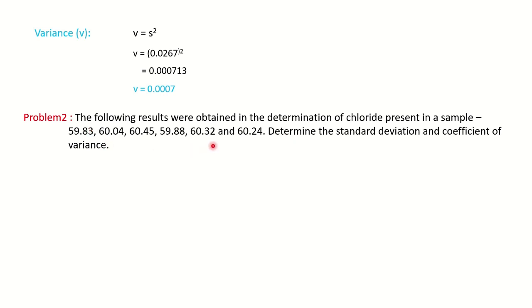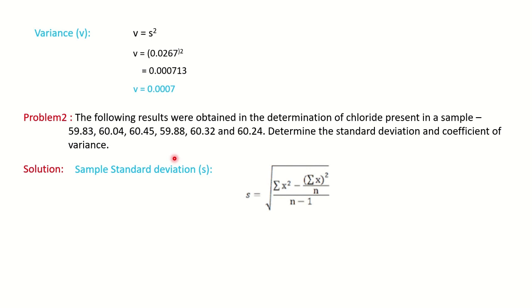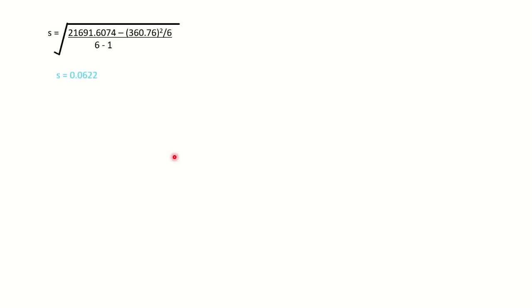The second problem again gives you sample data and asks you to calculate the standard deviation and coefficient of variation. For standard deviation, use the same formula and steps. You can pause the video, solve it, and verify your answer. Calculate summation of x, then summation of x squared, put the values into the formula, and find the standard deviation: 0.0622.